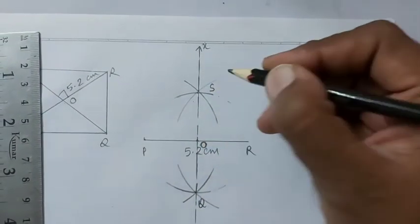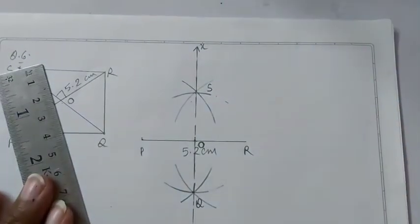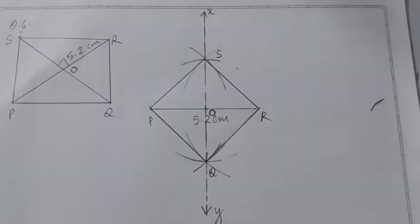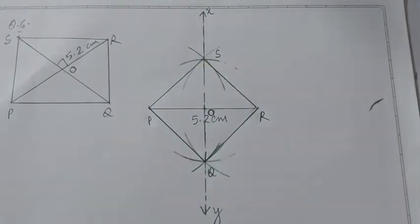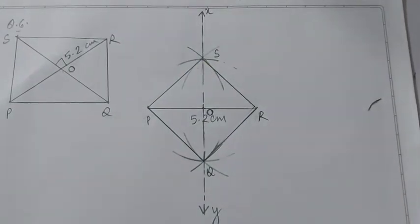Now join PQ, QR, RS and PS. Hence PQRS is the required square.